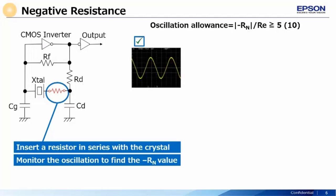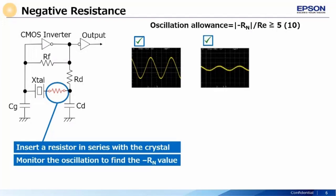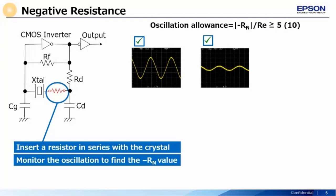Starting with the lowest setting of the variable resistor, gradually increase the resistance. Note the change in output on the oscilloscope with the increase in resistance. When the oscillation comes to a stop, note the value of the variable resistor. Add this to the maximum resistance value of the crystal, and you have the negative resistance value.